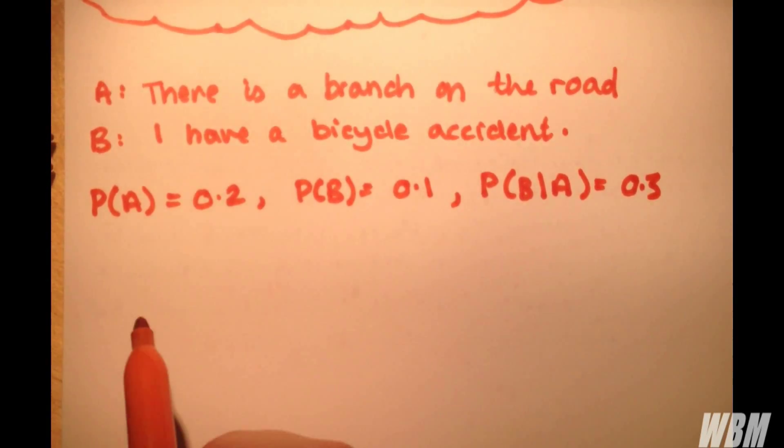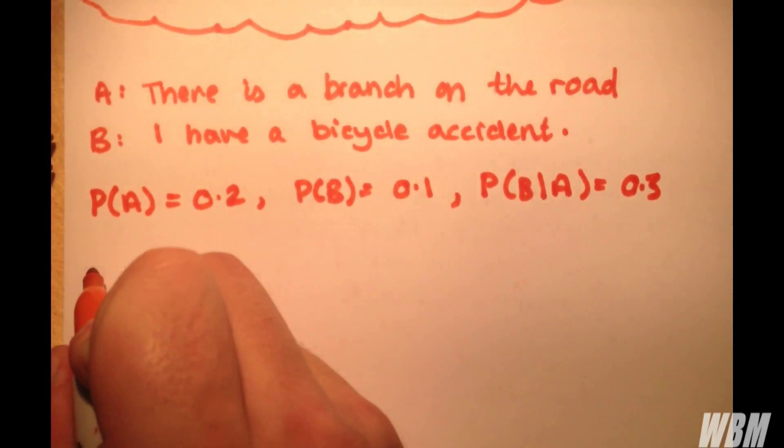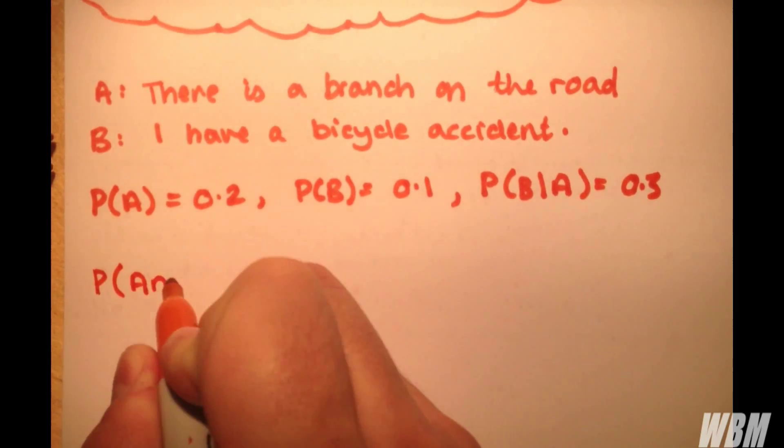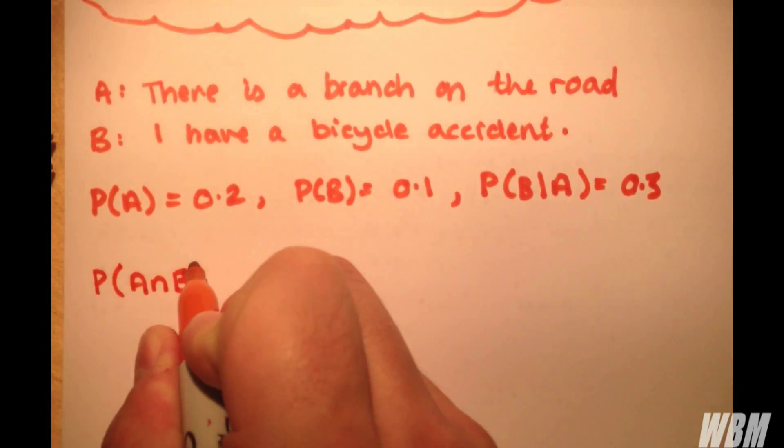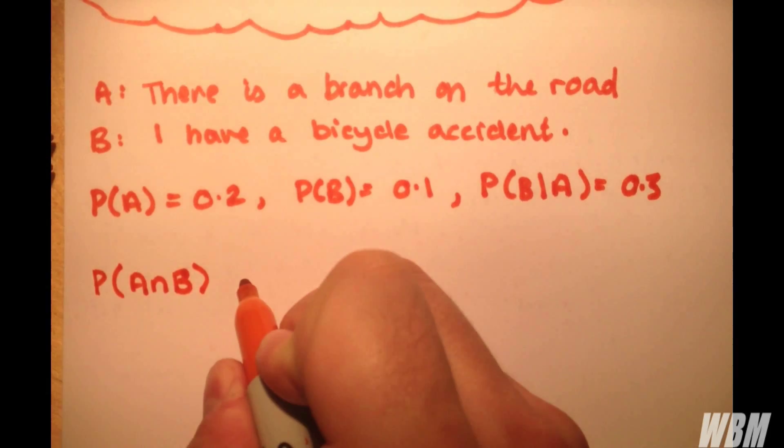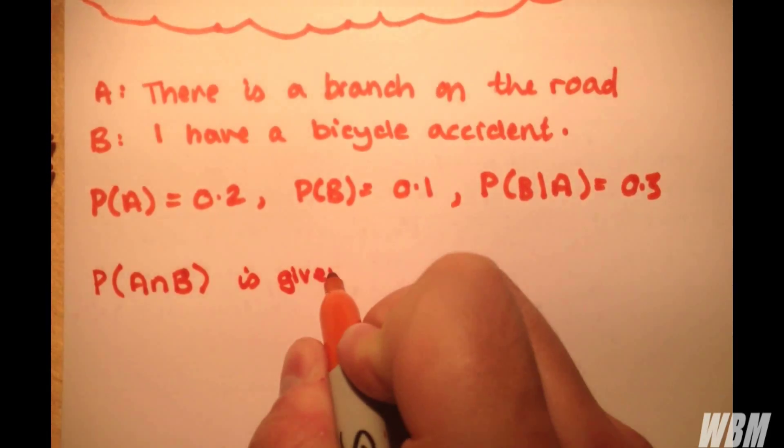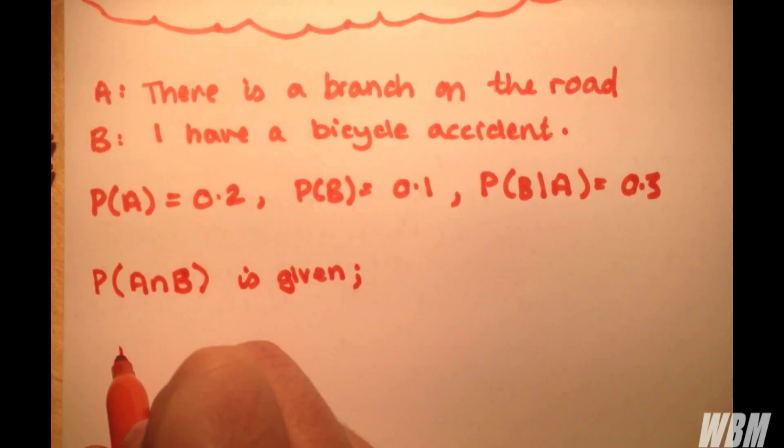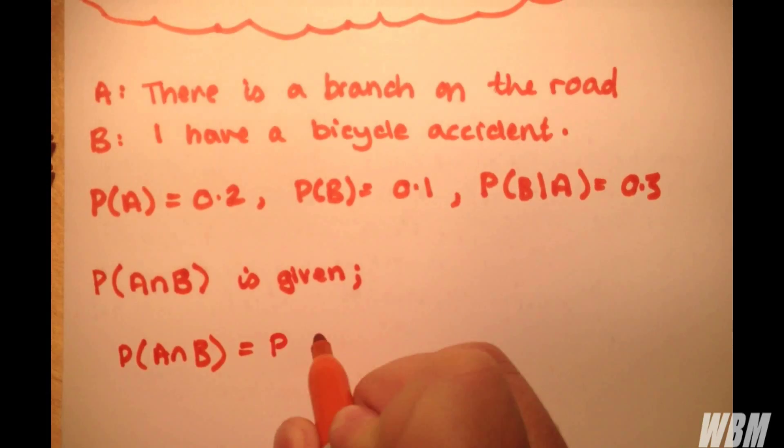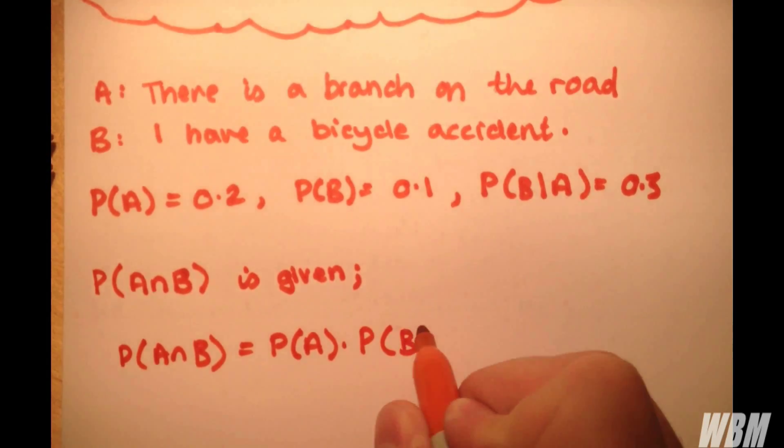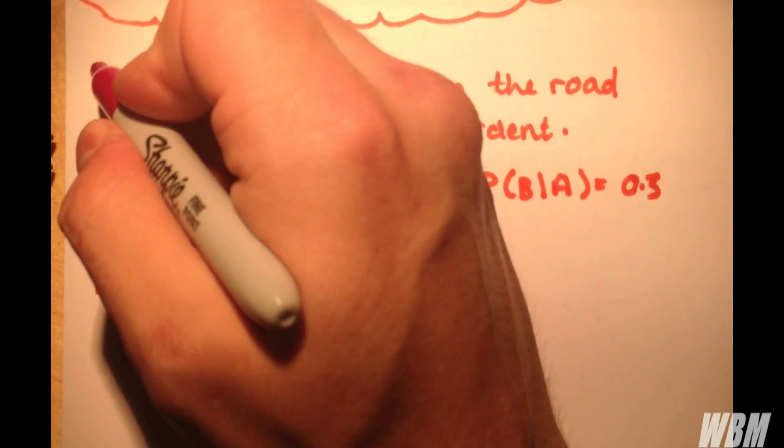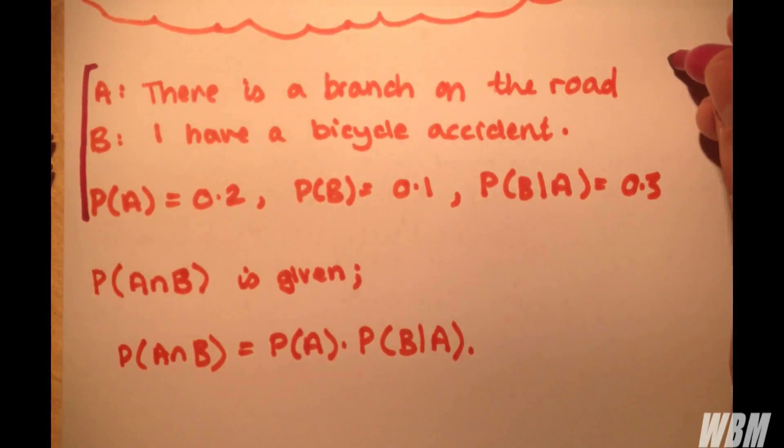So if A and B are not independent, then the probability of the intersection A intersect B is given in the following way. Probability A intersect B equals probability of A multiplied by the probability of B given A. Let me quickly sort of outline the question.